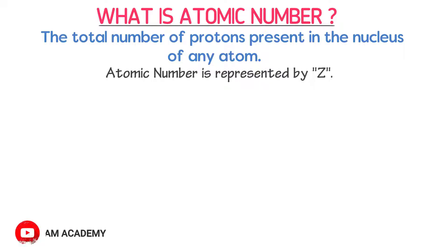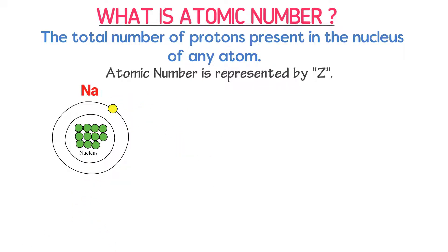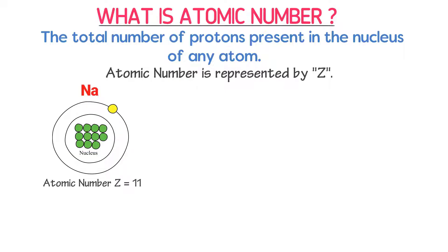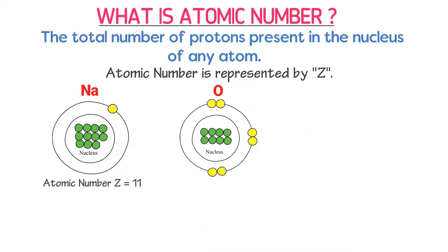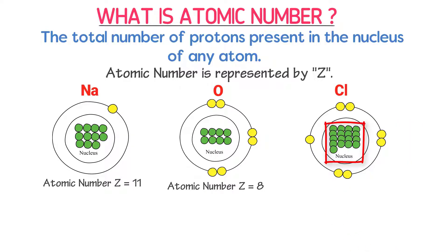Atomic number is represented by the symbol Z. For example, consider an atom of sodium element. Note that I only draw the valence shell of all atoms. There are 11 protons present in the nucleus of sodium, hence the atomic number of sodium is 11. There are eight protons present in the nucleus of oxygen, hence the atomic number of oxygen is 8. There are 17 protons present in the nucleus of chlorine, hence the atomic number of chlorine is 17.